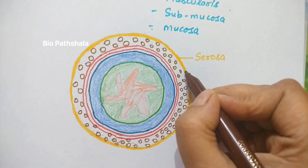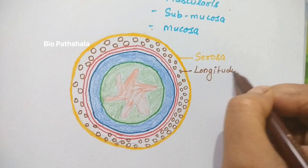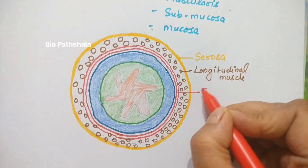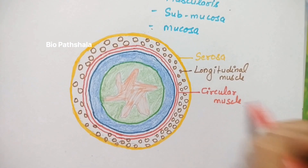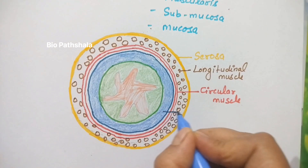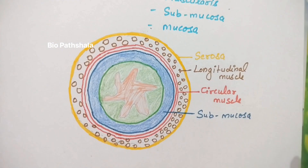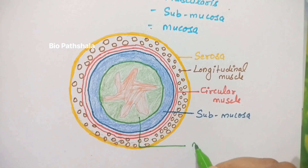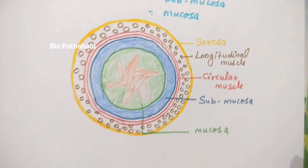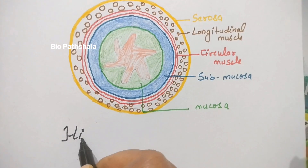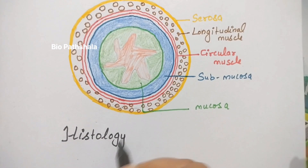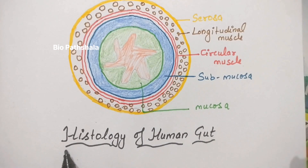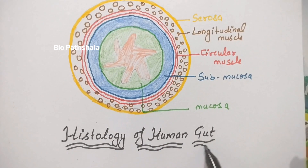Inner to serosa is muscularis, which consists mainly of two regions: the longitudinal muscles and the circular muscles. In the case of the stomach, an additional layer of muscles known as oblique muscles is also present. Next to muscularis is submucosa, and the innermost layer is mucosa — the mucosa faces the lumen, which is where food is present.